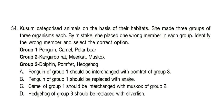Question 34: Kusum categorized animals based on their habitats into three groups of three organisms each, but placed one wrong member in each group. Group 1: Penguin, Camel, Polar Bear. Group 2: Kangaroo Rat, Meerkat, Musk Ox. Group 3: Dolphin, Pomfret, Hedgehog. Identify the wrong members. Correct answer is option C — camel from Group 1 should be interchanged with musk ox from Group 2.